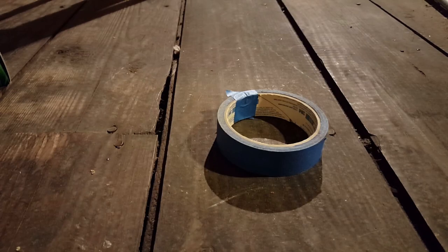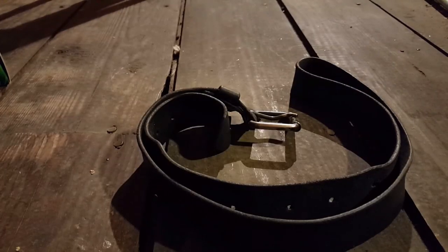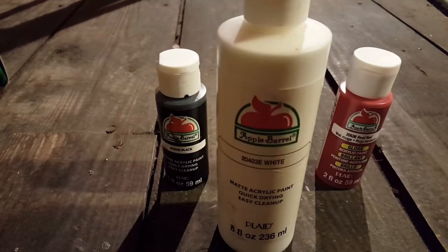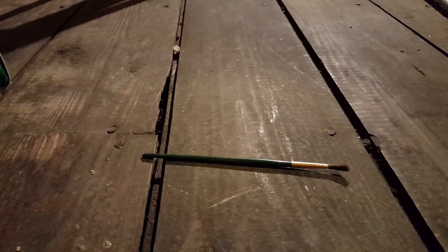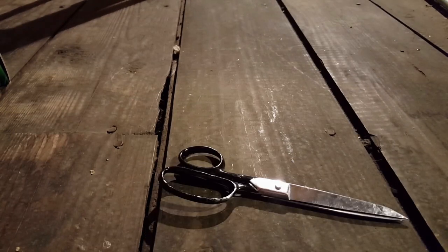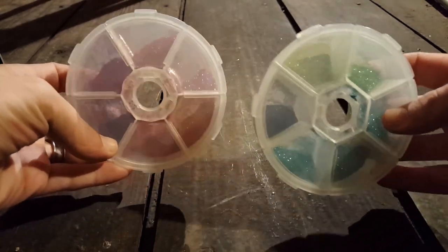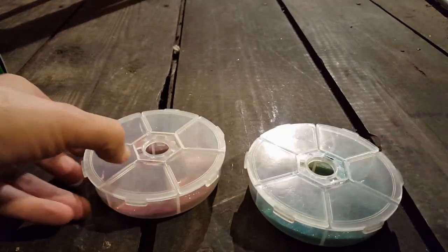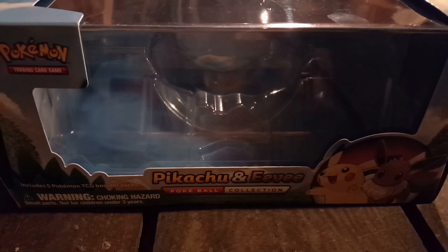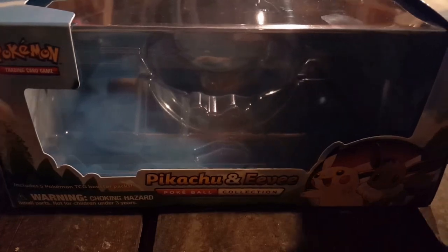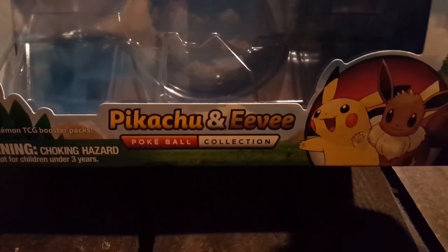Painter's tape, a belt that fits you and is easy to get on and off, red black and white acrylic paint, a paintbrush, scissors, some glitter if you want it, and the plastic inserts for a Pikachu and Eevee Pokeball collection box.